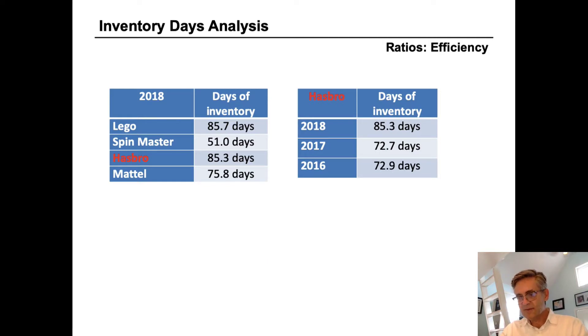And on the right hand side of the page, when we use horizontal analysis to compare the same metric over prior years, we can see that Hasbro's inventory took a step up in terms of days of inventory on hand from roughly 72 or 73 days for the last two years to now 85 days.